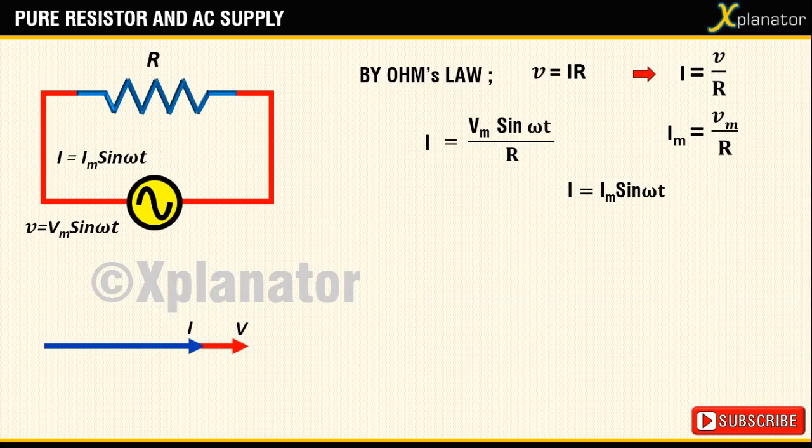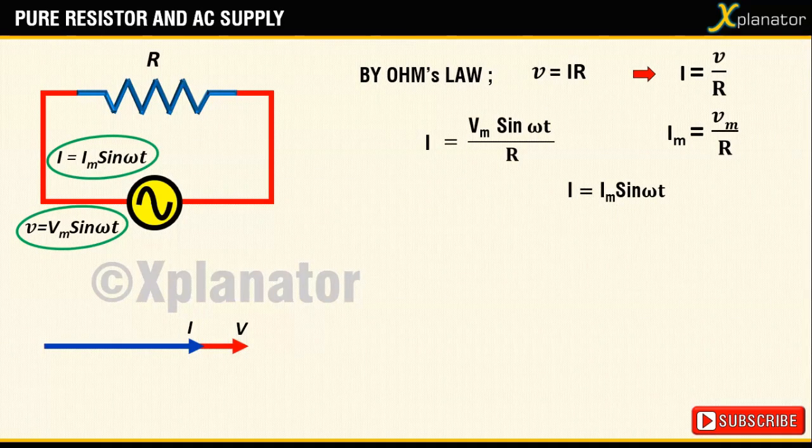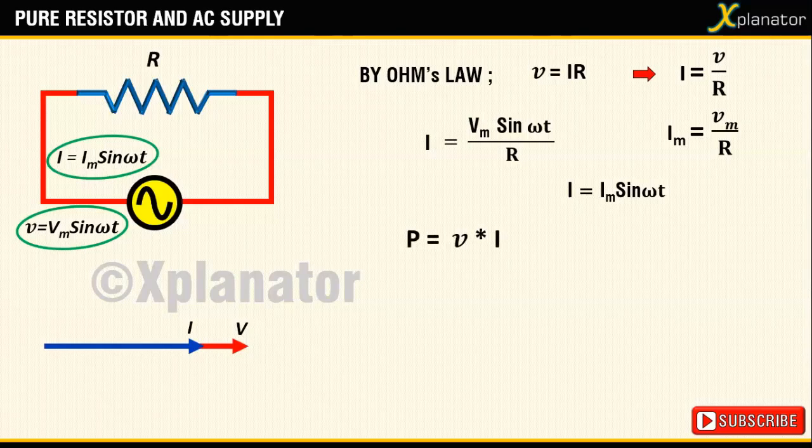Now that we have the equations for voltage and current, let us calculate the power dissipated in the circuit. Power is given by voltage multiplied by current.